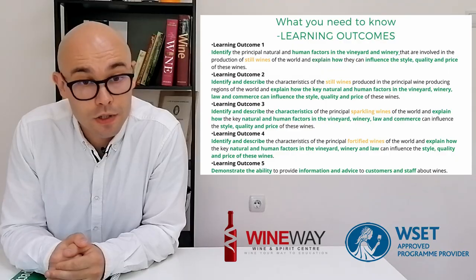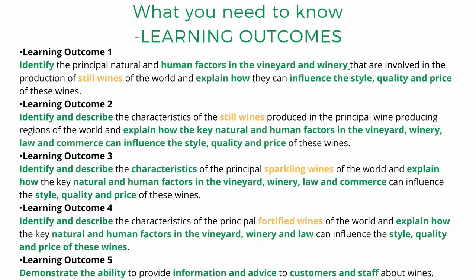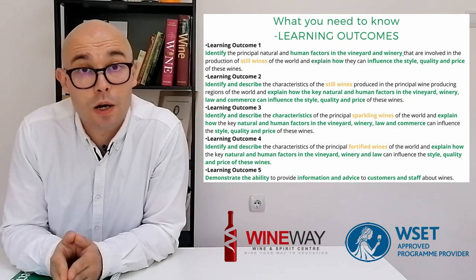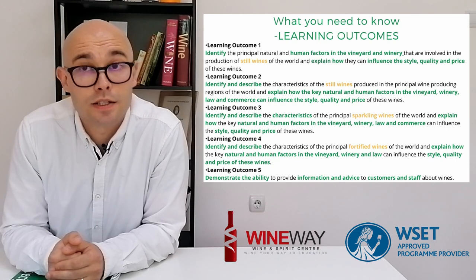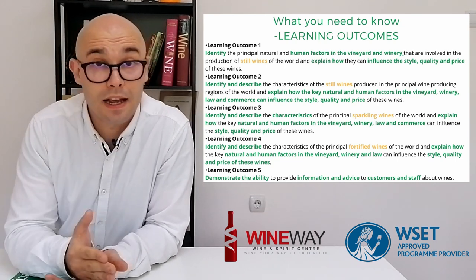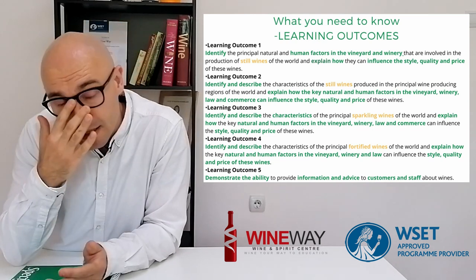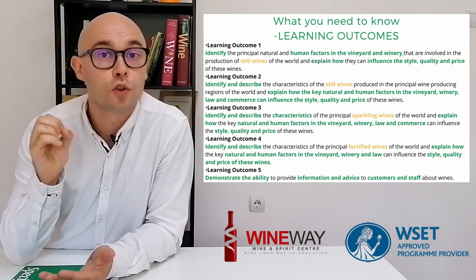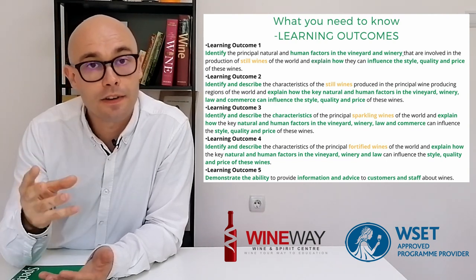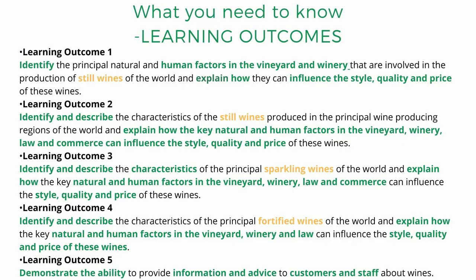Let's go through the five learning outcomes. Learning outcome number one is to identify the principal natural and human factors in the vineyard and in the winery that are involved in the production of still wines of the world, and explain how they can influence the style, quality and price of the wine. This is the most important learning outcome because you need to identify these factors and understand how they affect the style, quality and price. You'll then use this understanding for learning outcomes two, three and four — covering still wines, sparkling wines and fortified wines.